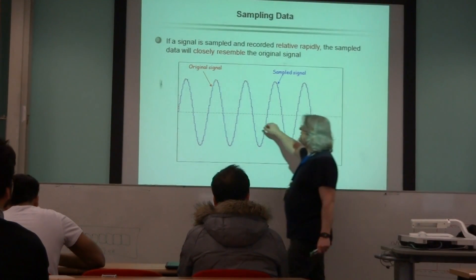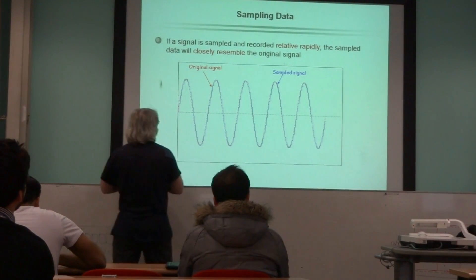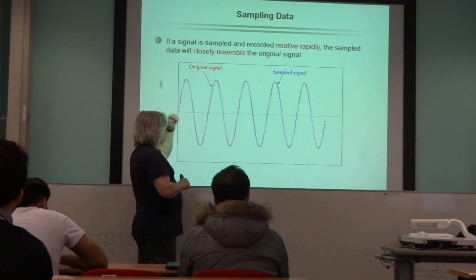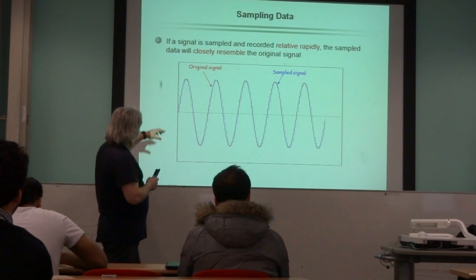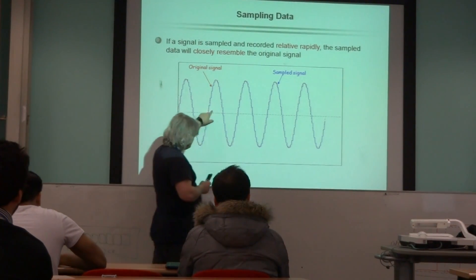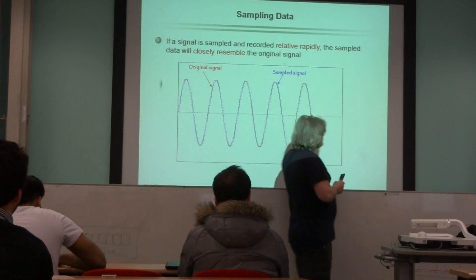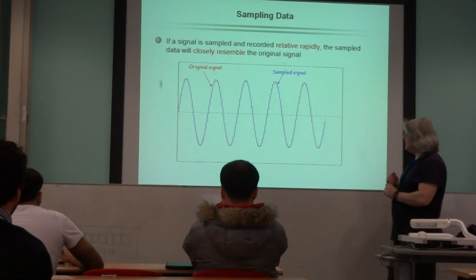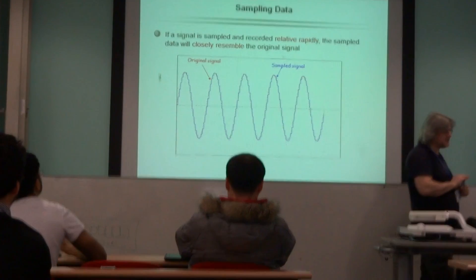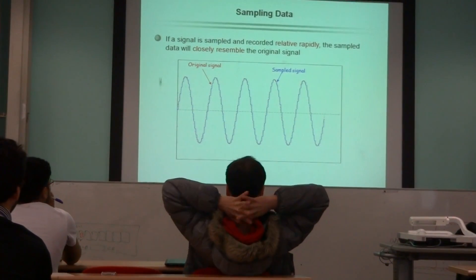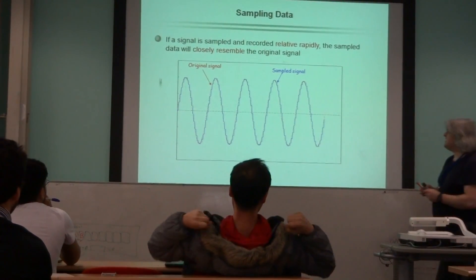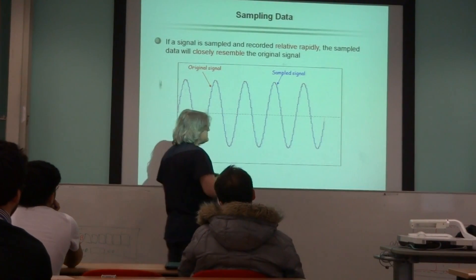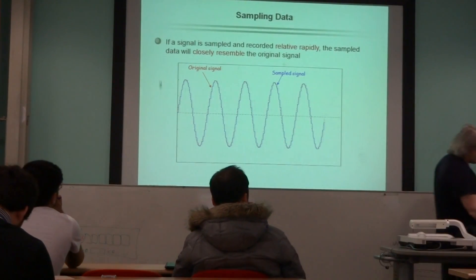Here we've got an example where the dotted line is an analog signal, and I've sampled it quite a short instance. I don't know what the resolution is here, but you can see that the representation, the digital representation of it is quite a reasonable approximation to the original analog signal. So, if we sample it at sampling instances which are relatively close together relative to the frequency of the signal, we're able to reproduce it quite well.